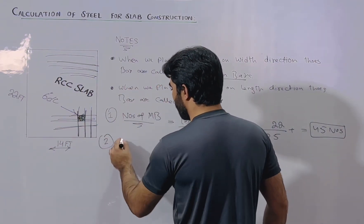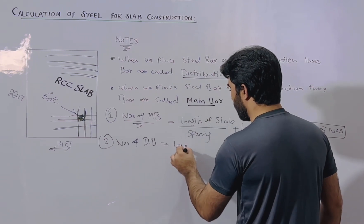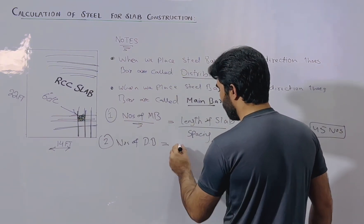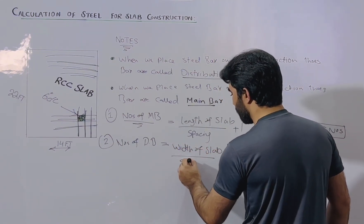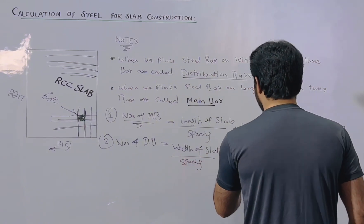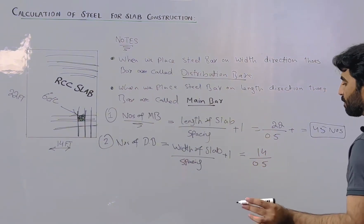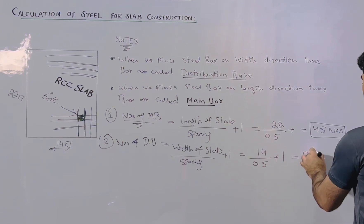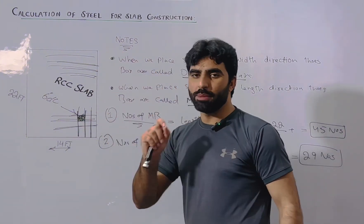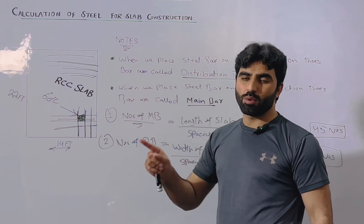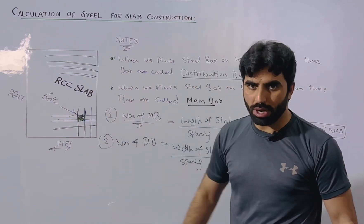Next, to find the number of distribution bars: width of the slab divided by spacing, plus 1. Width is 14 feet, divided by 0.5 feet, plus 1. So we require 29 distribution bars. The main bars should be placed first, then distribution bars are placed on top, because the main bars support the distribution bars.